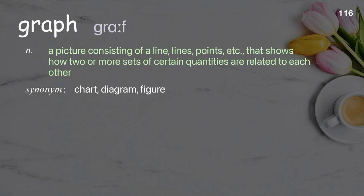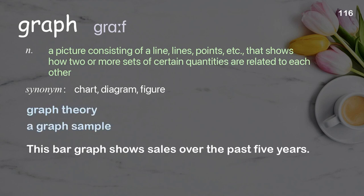Graph: a picture consisting of lines, points, etc., that shows how two or more sets of certain quantities are related to each other. Examples: graph theory, a graph sample. This bar graph shows sales over the past five years.